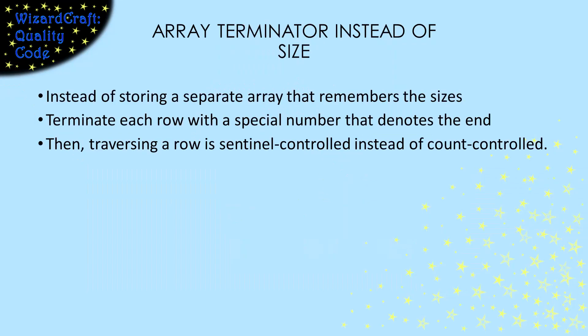As an alternative to keeping the sizes of the rows, we could add one entry to each row that tells us we're at the end. For example, we could say that each row ends with an entry of negative one, assuming that our real data could never be negative one. If we do that, then a loop that is walking down a row is a sentinel-controlled loop instead of a count-controlled loop. Let's look at an example.